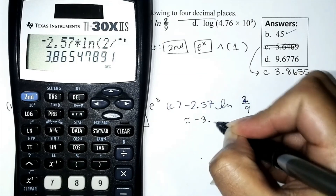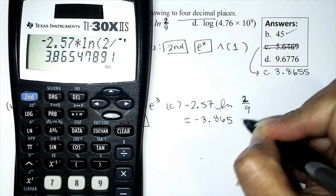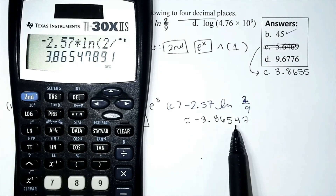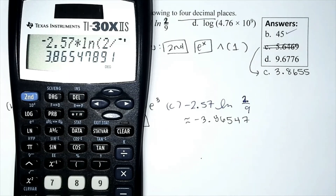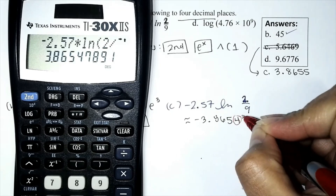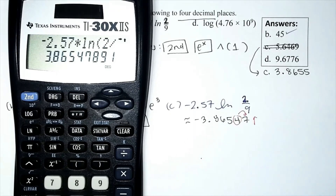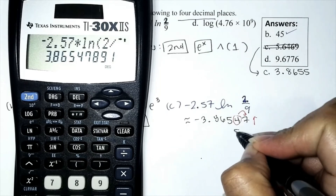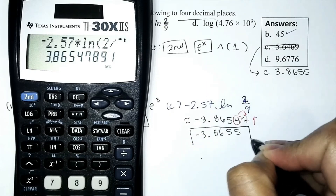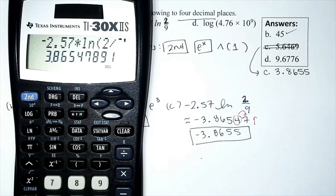Rounding the result to four decimal places: the display shows approximately negative 3.86554. The fourth decimal place digit is 5, and looking at the next digit we round up, giving us negative 3.8655. So negative 2.57 times the natural logarithm of two-ninths is approximately negative 3.8655.